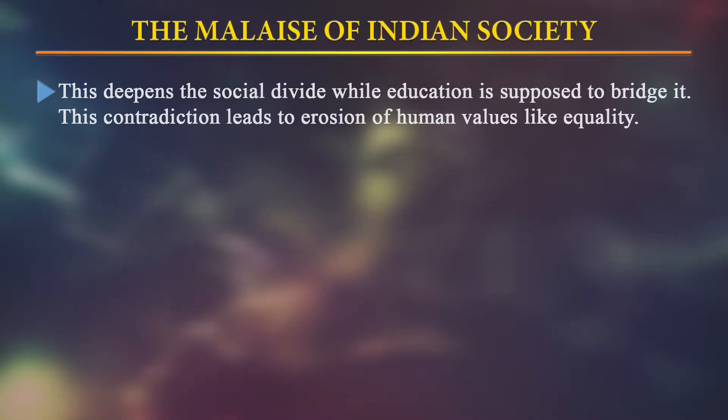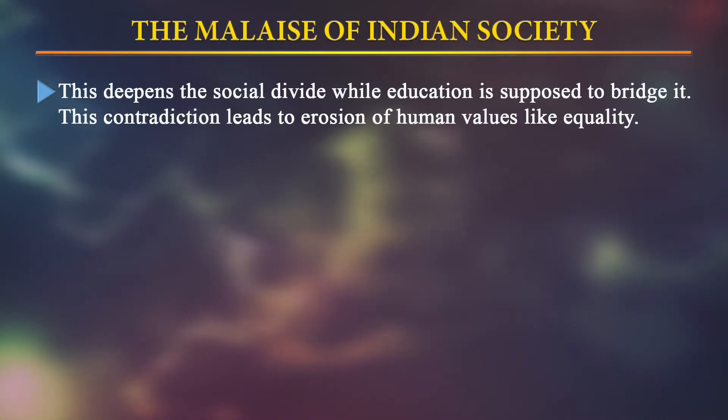Another social malice is that educational institutions like private schools and colleges are for privileged sections and out of reach for the poor. Certain schools and colleges are so expensive that they cater only to the wealthy, charging fees so high that they are unaffordable for the common masses. This deepens the social divide, whereas education is supposed to bridge the gap between poor and rich.